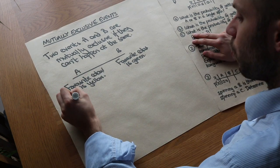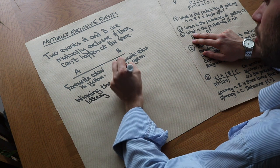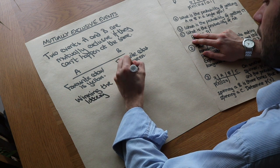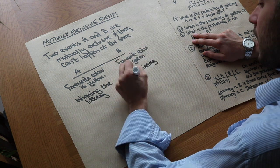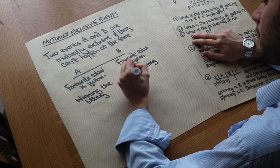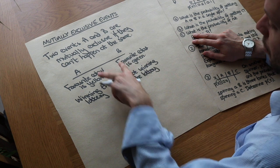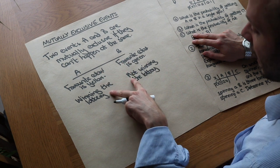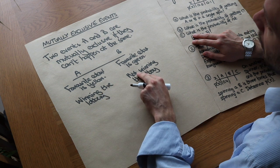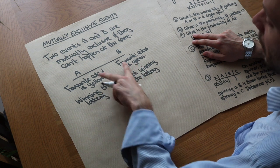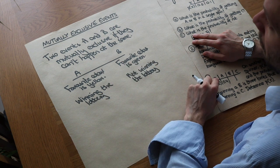Another example: winning the lottery and not winning the lottery. These are mutually exclusive because they can't happen at the same time. The difference with this example is that here one of these two things must happen if we buy a lottery ticket, whereas with the colours there could be other possibilities.